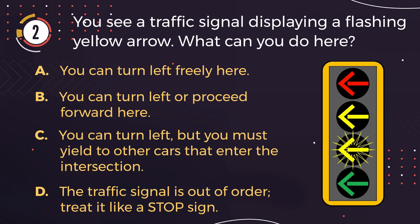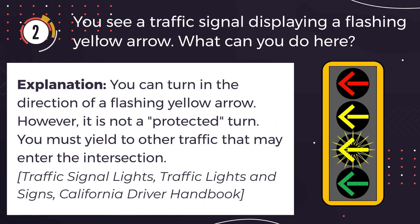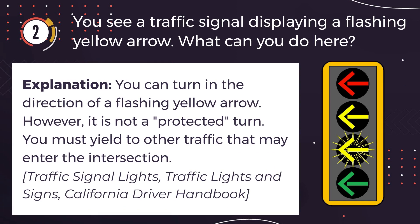The correct answer is C: You can turn left, but you must yield to other cars that enter the intersection. Explanation: You can turn in the direction of a flashing yellow arrow. However, it is not a protected turn. You must yield to other traffic that may enter the intersection.